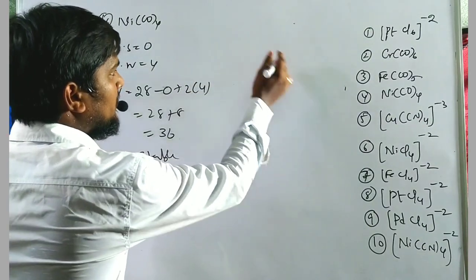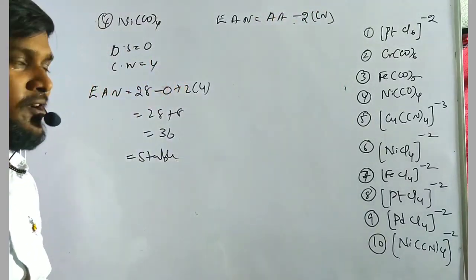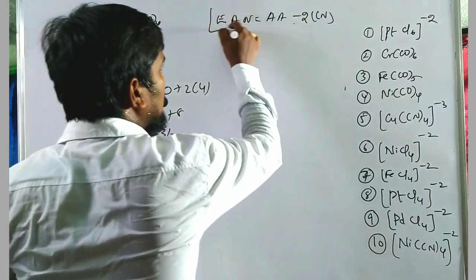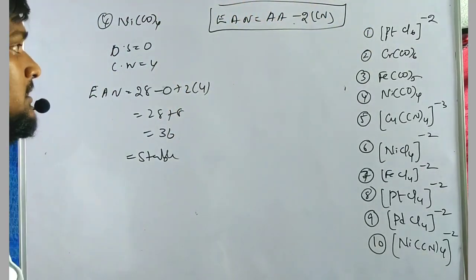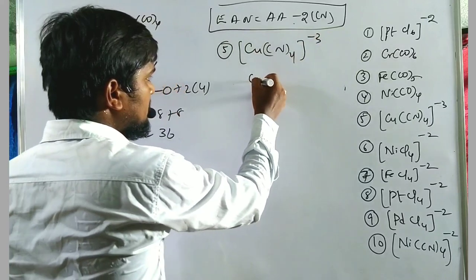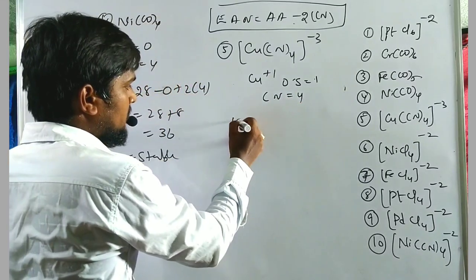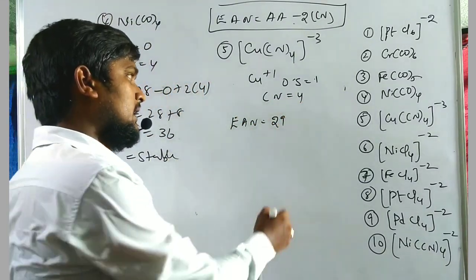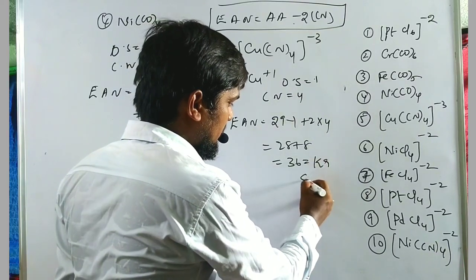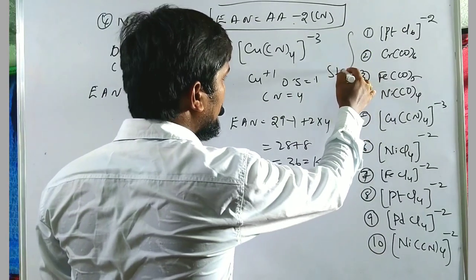In general, for pure metal carbonyls where the oxidation state is 0, the EAN simplifies to: EAN = actual atomic number + 2 × coordination number. Exercise example 5: [Cu(CN)4]³⁻ — copper is in +1 oxidation state, coordination number = 4. EAN = 29 − 1 + (2 × 4) = 28 + 8 = 36, equal to krypton. This is a stable compound. The first five examples are all stable.